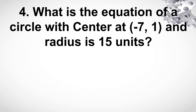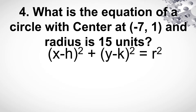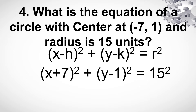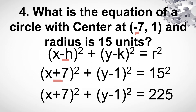What's the equation of a circle with center at (-7, 1) and the radius is 15 units? So gamit yung formula natin, substitute natin. So magiging x minus minus 7 plus y minus 1 is equal to 15 squared. Paano ito naging positive? Kasi x minus minus 7. Evaluate yung 15 squared. So that will give us x plus 7 squared plus y minus 1 squared is equal to 225.